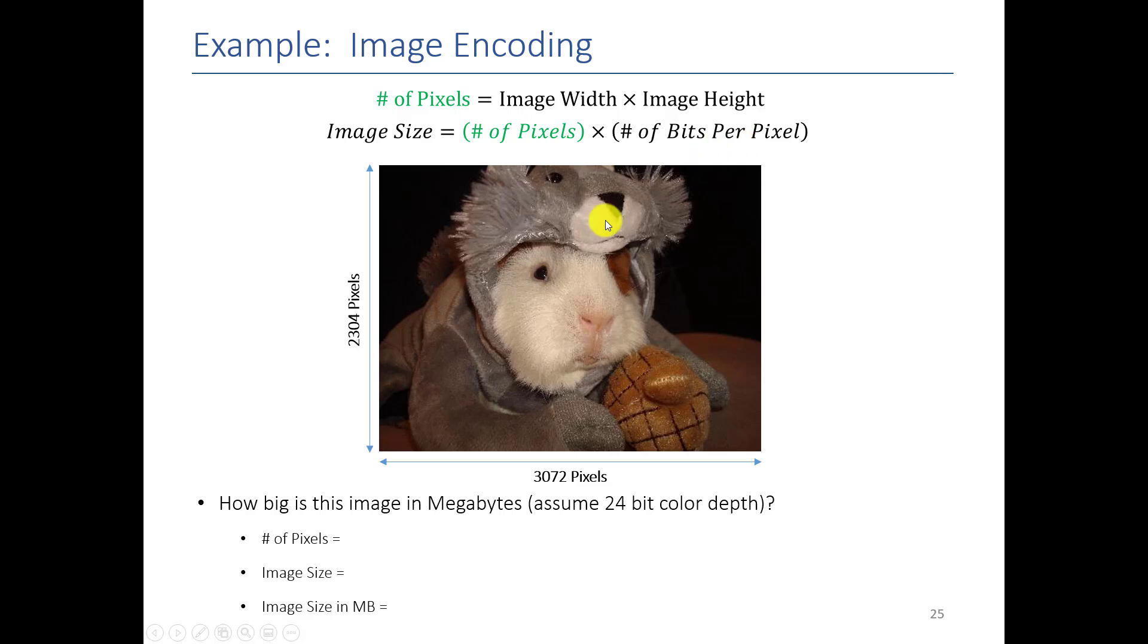So to practice this, we're going to have you calculate the size of this image, which is of my actual guinea pig that my wife dressed up while I was on a deployment. So you're going to calculate how big this image is in megabytes. And you can go ahead and assume that it's 24 bits per pixel. That's what the color depth means. So I'm going to give you a second to work on that, and then we'll go over the answer.